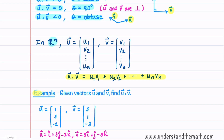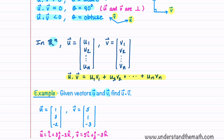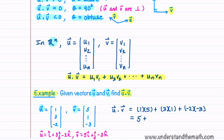Let's now look at an example problem where we're given vectors u and v and asked to find the dot product. To find u dotted with v we multiply the corresponding components: one times five, plus three times one, plus negative two times negative three. This gives us five plus three plus six, so the dot product is equal to fourteen.